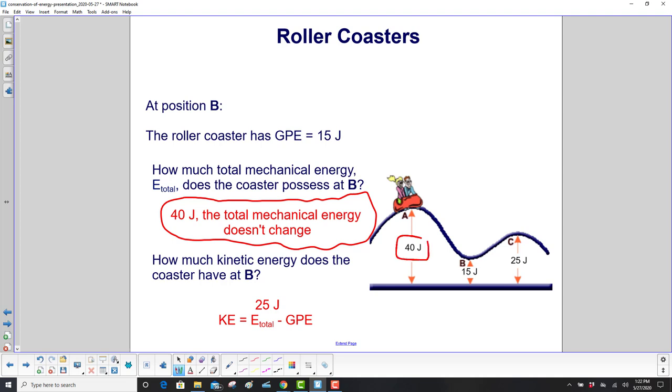See right here, all the GPE in the beginning, that's our total mechanical energy. So how much kinetic energy do we have? Well, we have GPE plus KE equals E_total. So the kinetic energy is the total energy minus GPE. 40 minus 15 gives us 25 joules of kinetic energy.